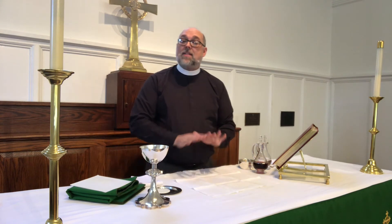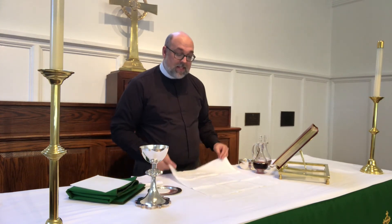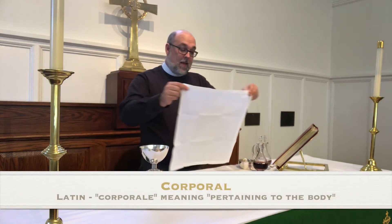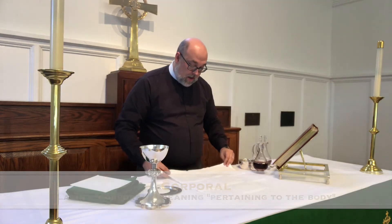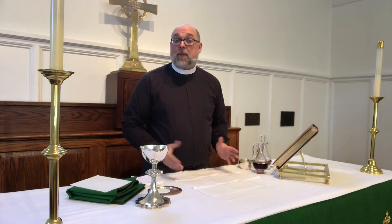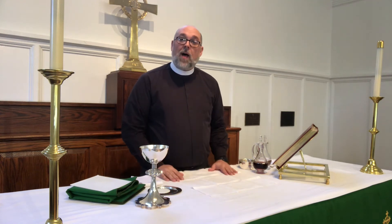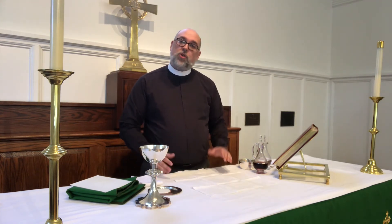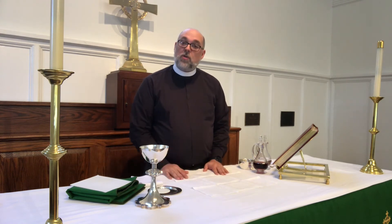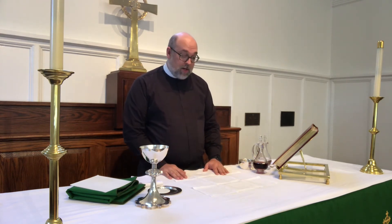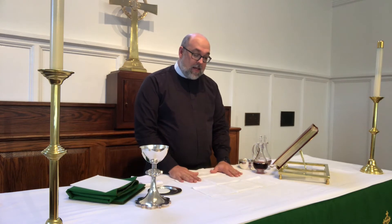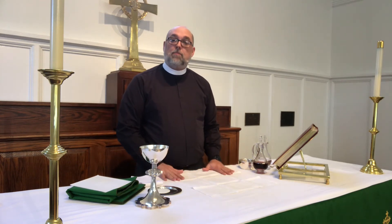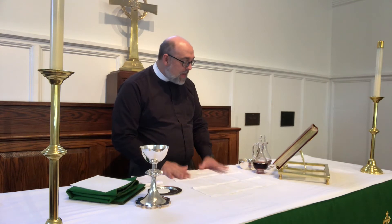Everything that is consecrated sits on this linen, which is called the corporal. The corporal is a white linen that is folded, and everything on it — it's much like a placemat. I kind of jokingly call it a crumb catcher, even though there are usually not very many crumbs when you use this kind of bread for Eucharist. Everything on the corporal is what gets blessed.